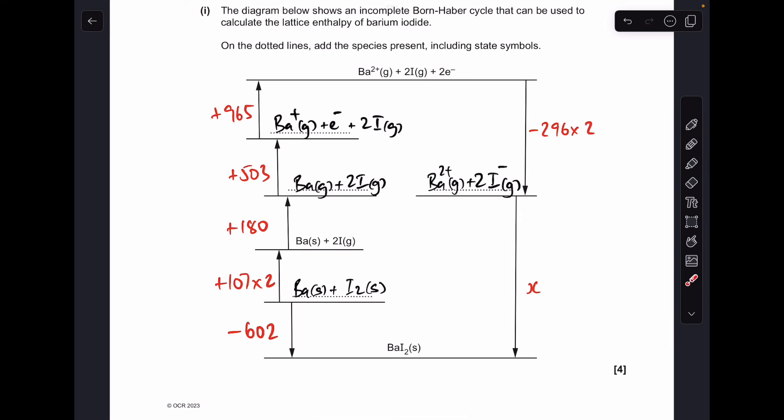Before we go into the actual calculation for lattice enthalpy, let's quickly run through these numbers and where they're coming from. This here is the enthalpy change of formation, and the next one is for the atomization of iodine. Because we're generating two moles of gaseous atoms, we need to double the atomization for iodine. Next one is atomization of barium.